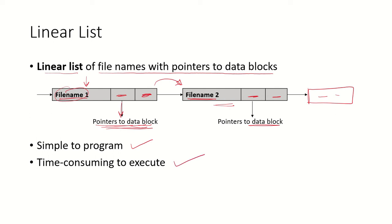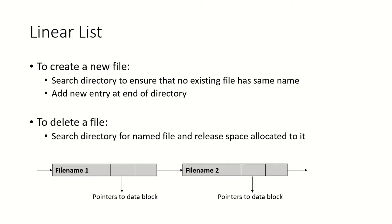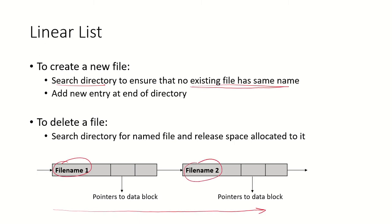This kind of data structure is simple to program but it is time consuming to execute. If we want to create a new file, we have to search the whole directory to ensure that there is no existing file with the same name. If there is no existing file with the same name, we will add a new entry at the end of the directory.